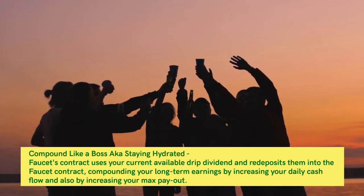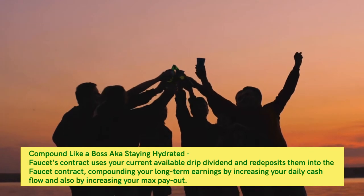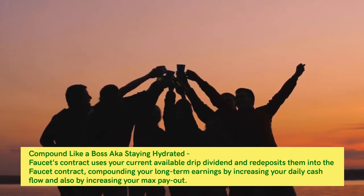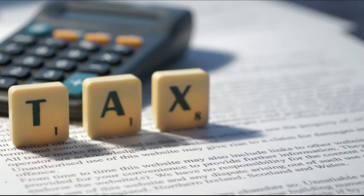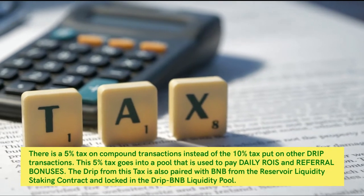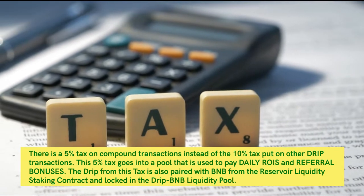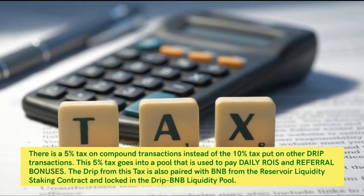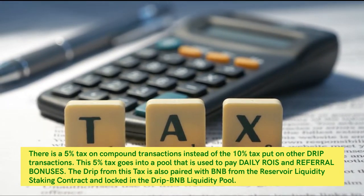Compounding, also known as staying hydrated, means the faucet contract takes your current available DRIP dividends and re-deposits them into the faucet contract, compounding your long-term earnings by increasing your daily cash flow and max payout. There is a 5% tax on compound transactions instead of the 10% tax on other DRIP transactions. This 5% tax goes into a pool used to pay daily rewards and referral bonuses, with the DRIP from this tax paired with BNB from the Reservoir Liquidity Staking contract and locked in the DRIP/BNB liquidity pool.